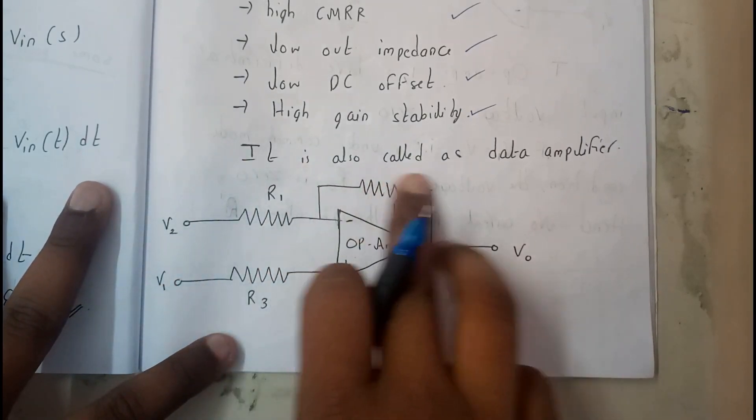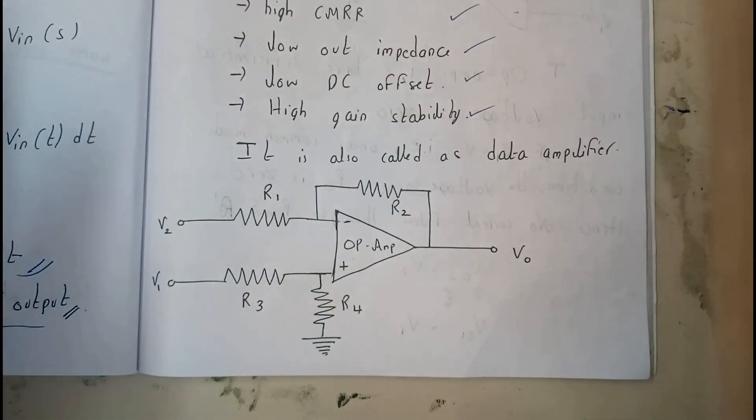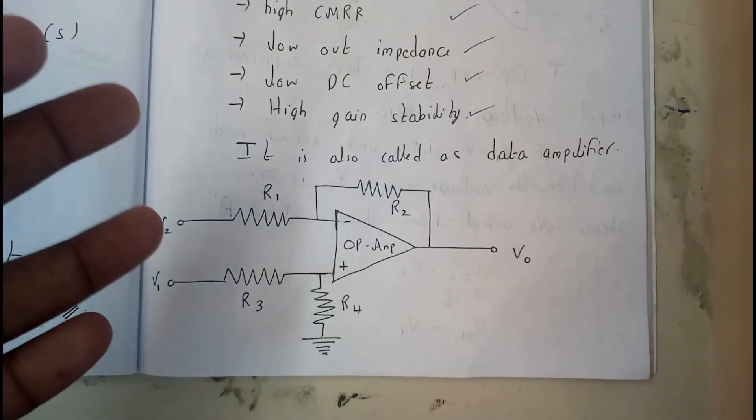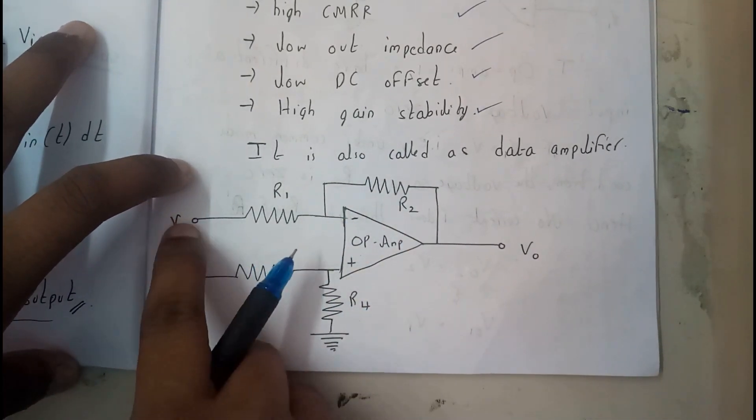It gives data like temperature, flow, humidity and many of those things can be obtained from this. This is a small diagram for this operational amplifier with inverting, non-inverting, this resistor as feedback, and this is a grounded resistor.